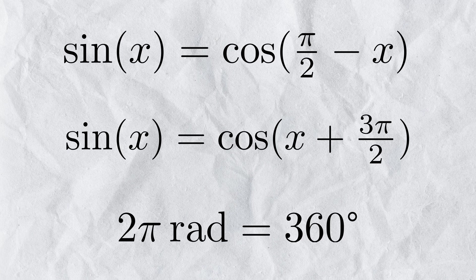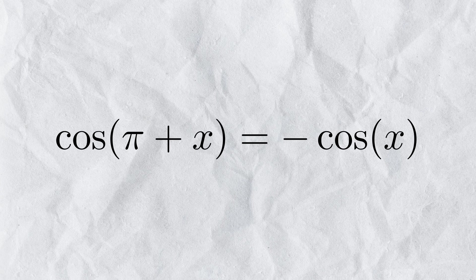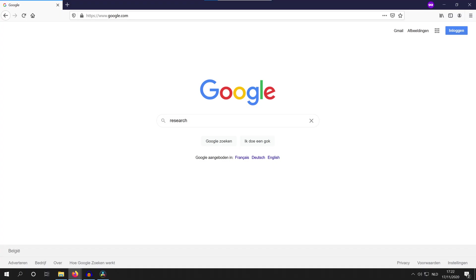For cosine we only need to find half the function, as we can do cosine of pi plus x equals negative cosine of x for the other half. For the half we do have to implement, it started with some research.